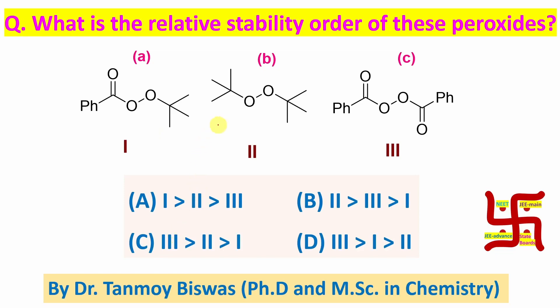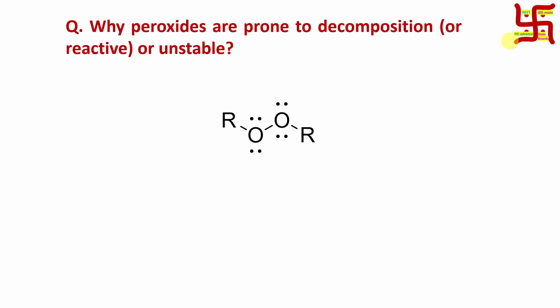Now, look at the question carefully. What is the relative stability of this peroxide? Remember, peroxide is generally unstable. They are very reactive, or they can be decomposed very easily. They have a very high tendency for decomposition.